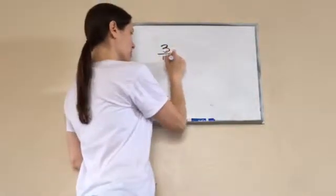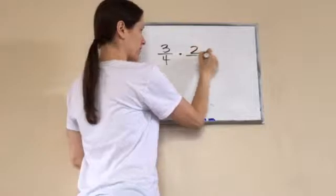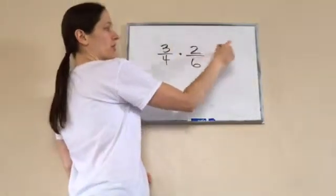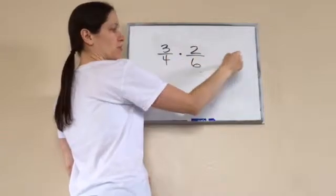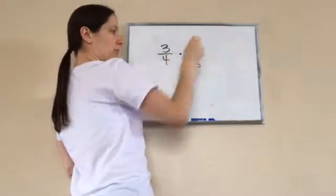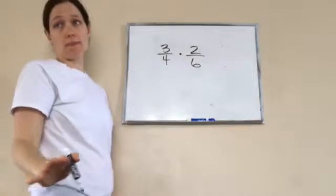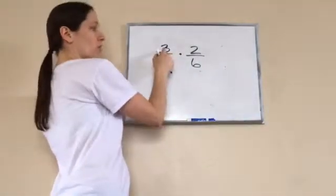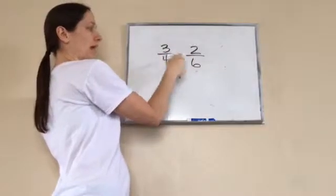So you're used to doing problems like this, right? Instead of going 3 times 2 equals 6 and 4 times 6 equals 24 and then reducing this big number, we're going to reduce before we multiply, which is called canceling out.